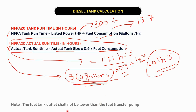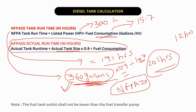As per NFPA 20, the requirement is only 12 hours, so our selected 360-gallon tank satisfies the NFPA 20 requirements. If someone asks whether a 300-gallon tank can be selected, you need to verify it complies with the two methods explained in the previous slides and decide whether it can be considered.